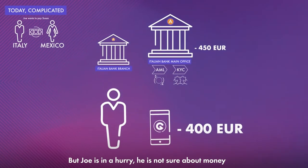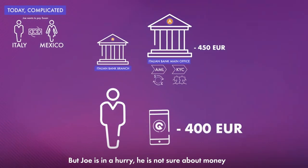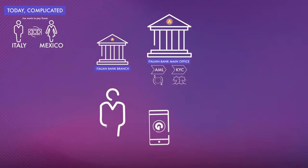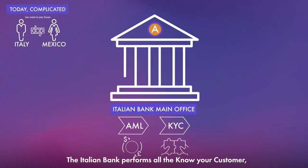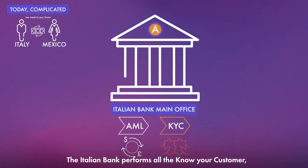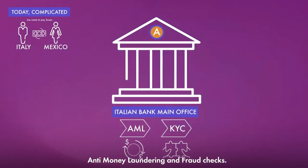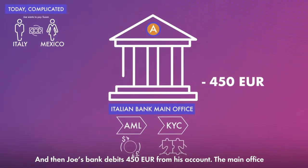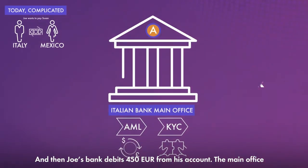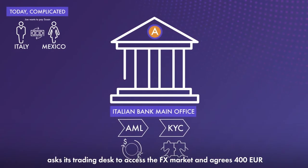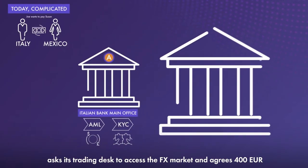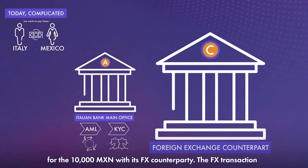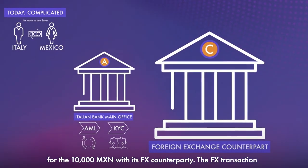But Joe is in a hurry. He's not sure about money transfer apps, so he tells the cashier he wants to go ahead anyway. The Italian bank performs all the know-your-customer, anti-money laundering, and fraud checks. Then Joe's bank debits 450 Euro from his account, and the main office asks its trading desk to access the FX market and agrees 400 Euro for the 10,000 Mexican Pesos with its FX counterparty.